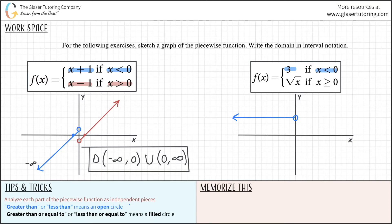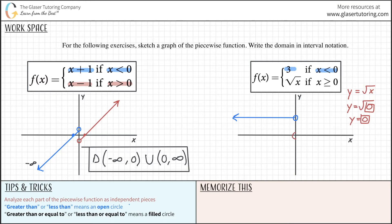Now for when x is greater than or equal to 0, we plug into the next function: y equals radical x, or square root of x. Plug in x equals 0 first: the square root of 0 is 0, so when x is 0, y is 0 — right at the origin. This is a filled-in circle because we have a greater than or equal to sign. Now choose x equals 4: I know the square root of 4 is 2, so when x is 4, y is 2. Go out four spots and up two.